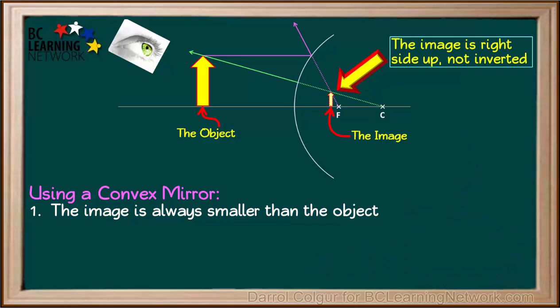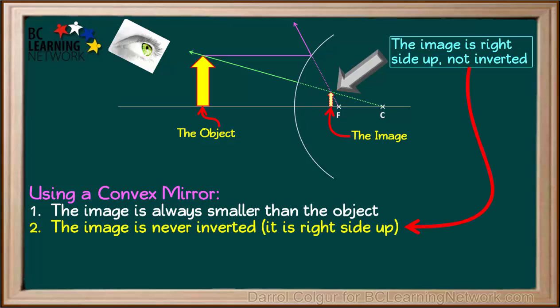Notice that the image in this example is right side up, not inverted. In fact, all images in a convex mirror are right side up. They are never inverted.